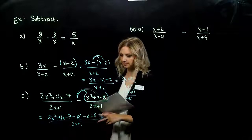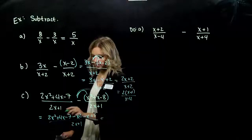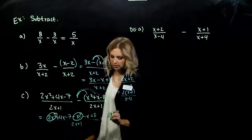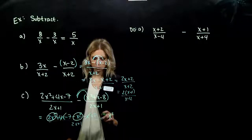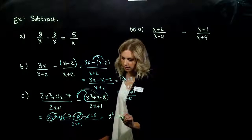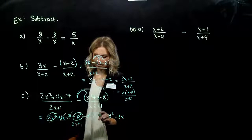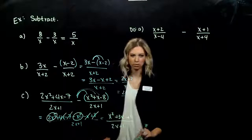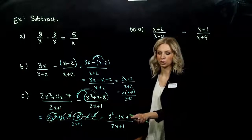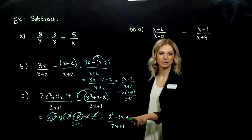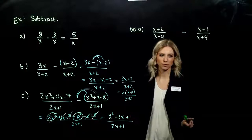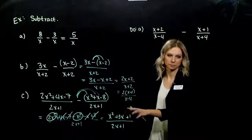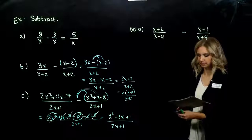As we combine our like terms: how many x squareds? I've got 2 and I'm taking away 1, so I've got 1x squared left. I've got 4x minus 1x, gives me positive 3. And negative 7 plus 8, I get a positive 1. 2x plus 1 down below. Can we factor that numerator? 1 is prime — my only options are 1 and 1 for my constants, and I can never add 1 plus 1 and get 3. So that one can't factor, but we always want to check.